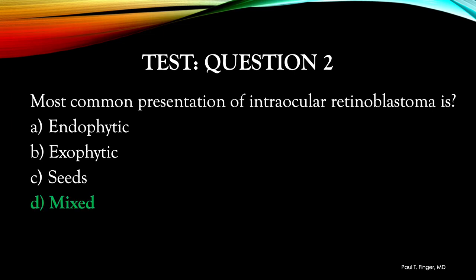This is a bit of a tough question because the actual presentation or stage of retinoblastoma is dependent upon where the child might live and thus their access to an eye cancer specialist. This was documented with medical evidence published in 2021, where a multi-center international registry study showed that socioeconomic status of a country will affect the stage of presentation and thus the patient's survival. At the New York Eye Cancer Center, however, the most common presentation for retinoblastoma is mixed.